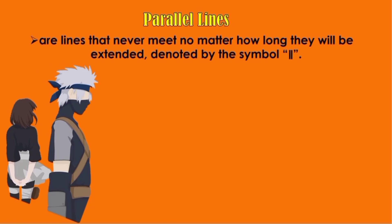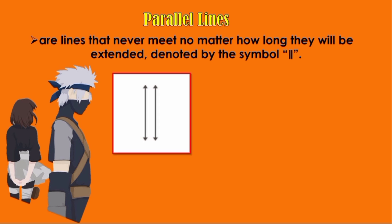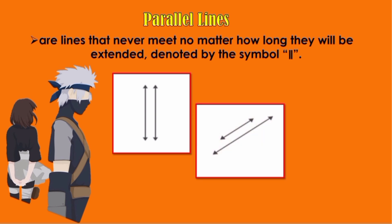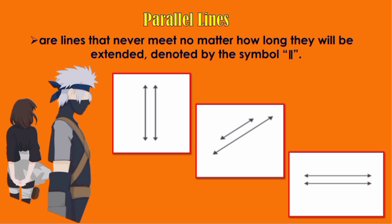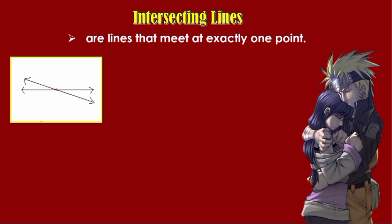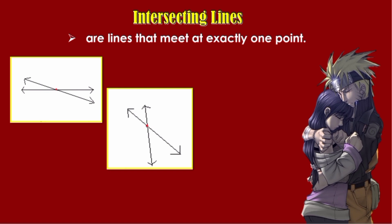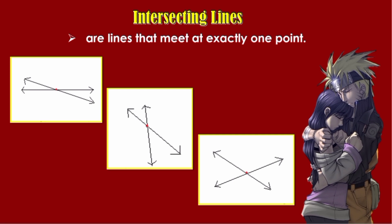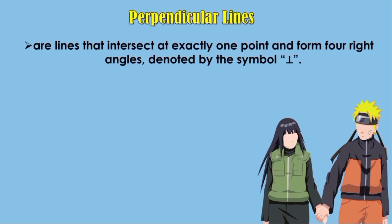Parallel Lines are lines that never meet no matter how long they will be extended, denoted by the parallel symbol. Here are some examples of parallel lines. Intersecting Lines are lines that meet at exactly one point. Here are examples of intersecting lines. Perpendicular Lines are lines that intersect at exactly one point and form four right angles, denoted by the perpendicular symbol. Here are examples of perpendicular lines.